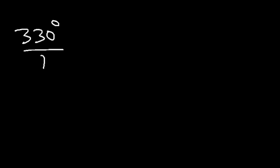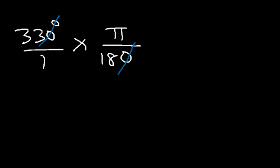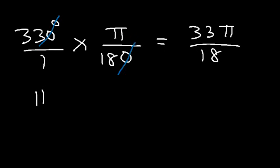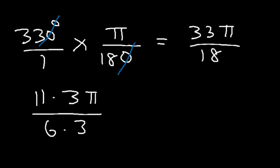Convert 330 degrees into radians. Multiply by pi over 180 and cancel a zero, giving 33 pi over 18. Since 33 is 11 times 3 and 18 is 6 times 3, cancel the 3, and the final answer is 11 pi over 6.